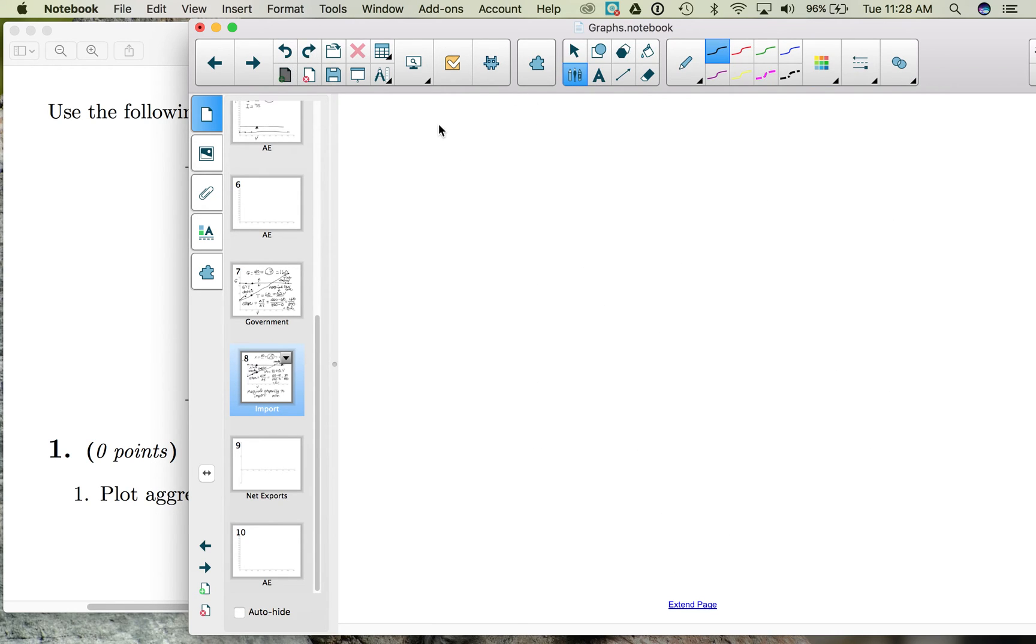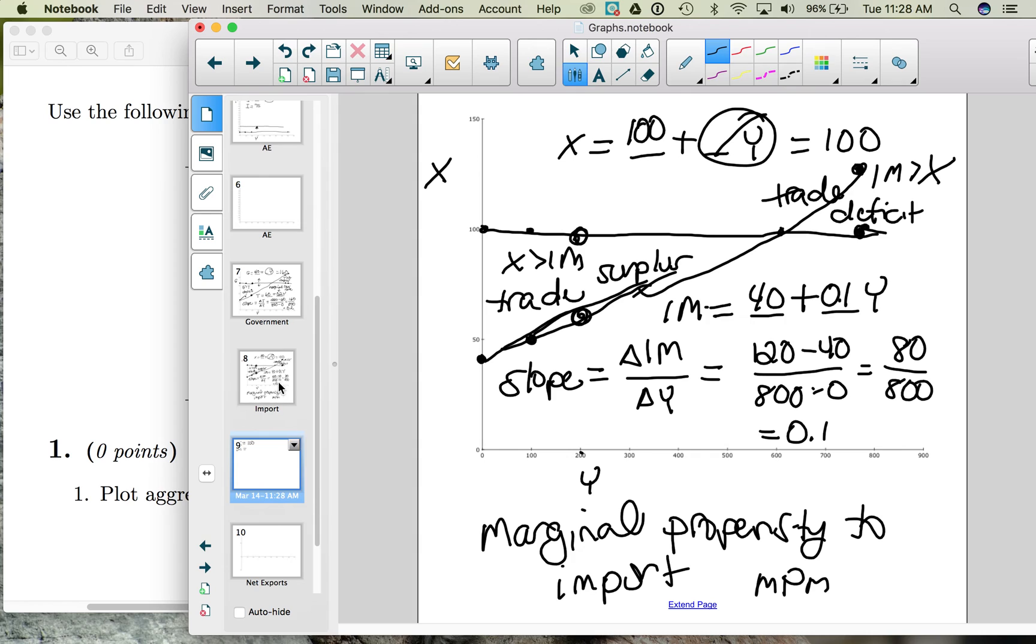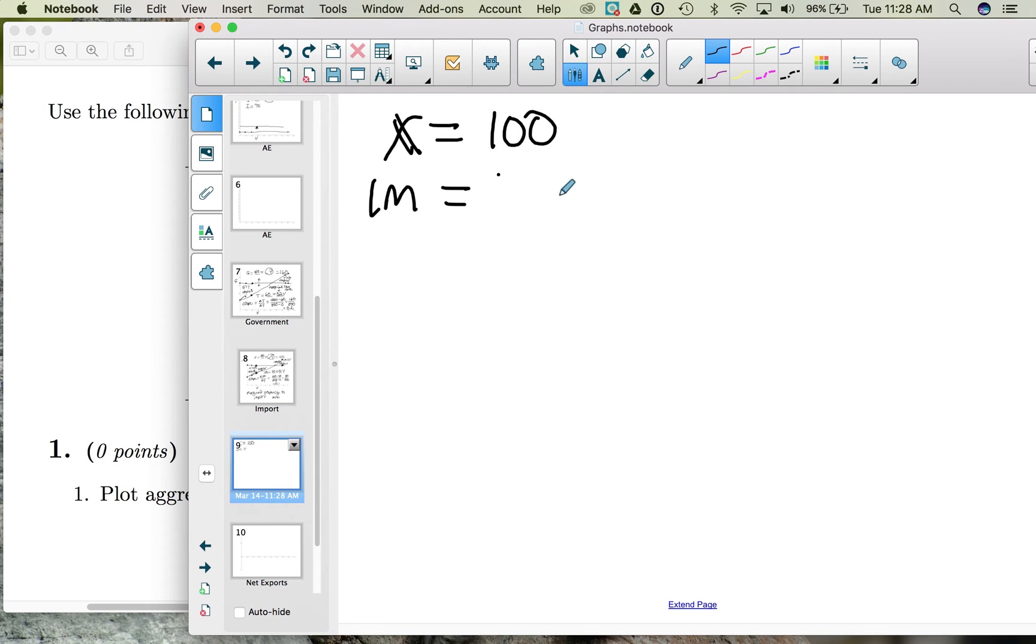So let's actually take our export formula. So here we have exports was equal to 100. We have imports, which is equal to 40 plus 0.1Y. So to find the formula for net exports, which is exports minus imports, we take our exports formula and subtract the formula for imports.